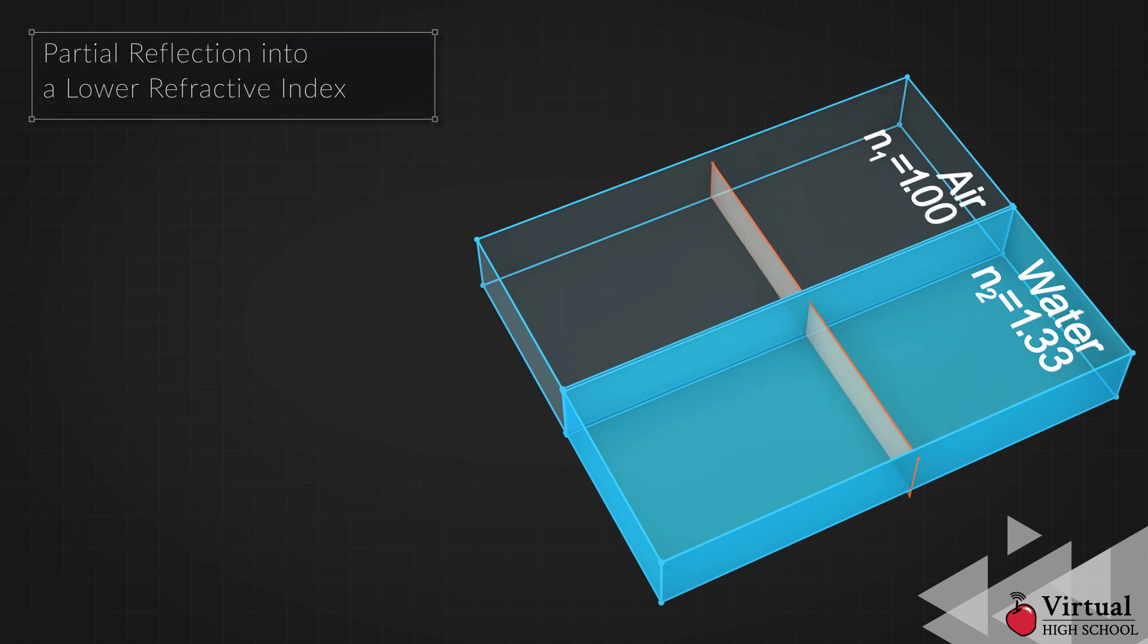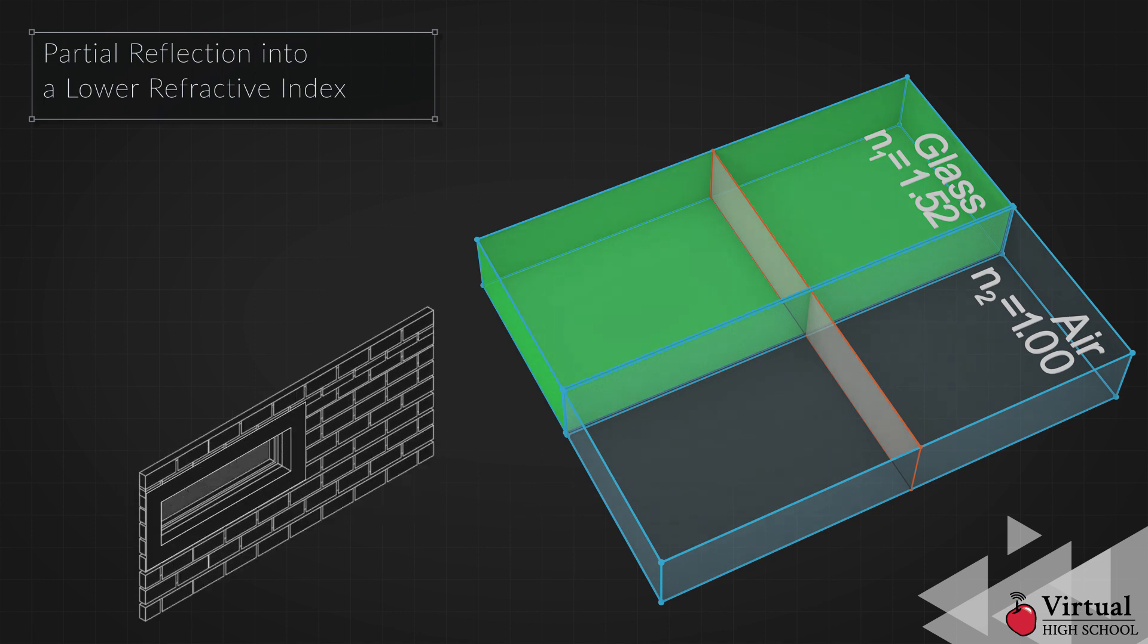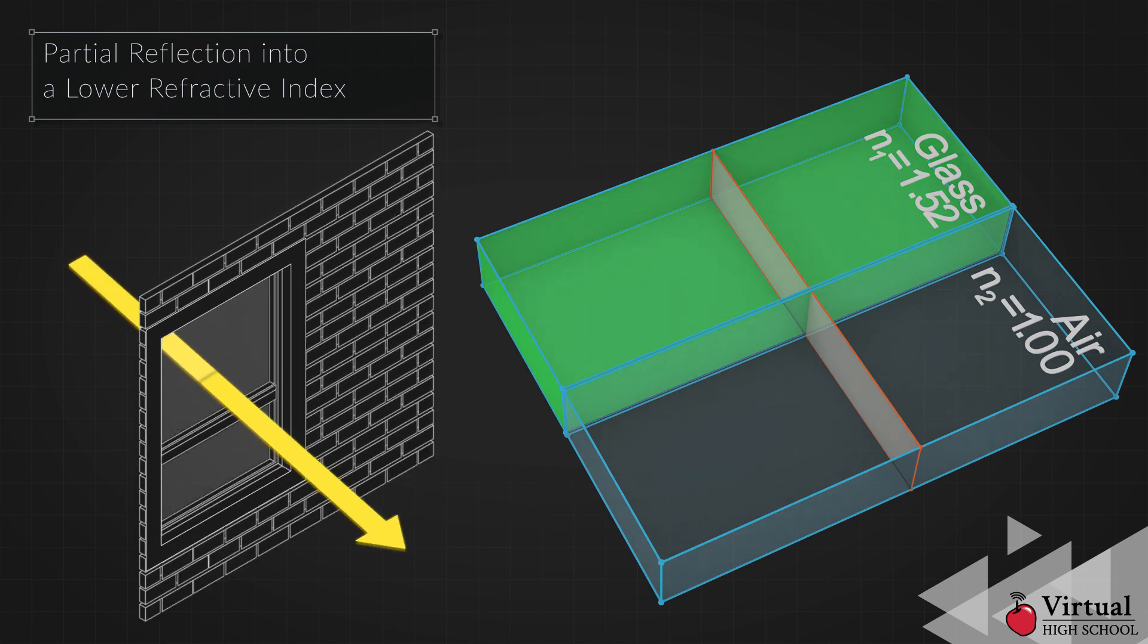Now let's investigate what happens when light moves from one medium into another with a lower refractive index, such as when light moves from glass into air.